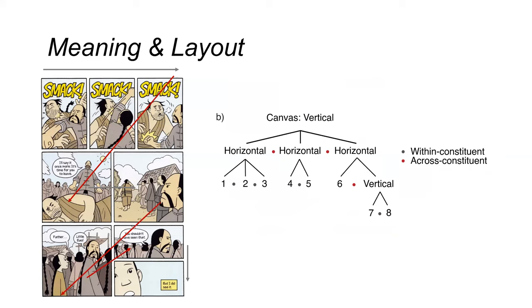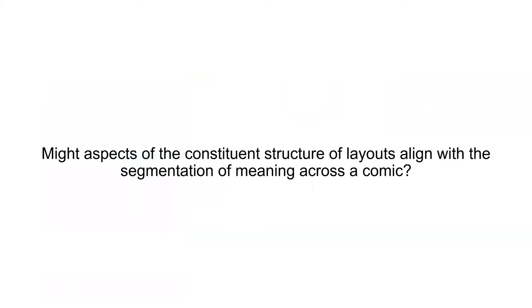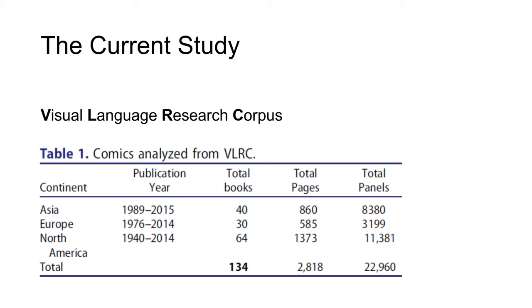The question we had in mind was: might aspects of the constituent structure of layouts align with the segmentation of meaning across comics? We looked at 134 comic books from North America, Europe, and East Asia. Our visual language research corpus is bigger, but because only 134 books were annotated with both the properties of layout and situational changes, we looked at this selection.